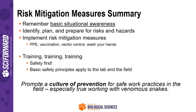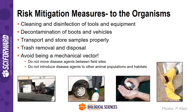The basic thing is situational awareness. We need to plan, prepare for risks and hazards, implement risk mitigation measures, make sure we have correct PPE, vaccination, and vector control. It's all about training and communication. We need to promote a culture of prevention for dealing with field work safety — especially true when working with venomous snakes in the field. Field researchers don't want to be the vector. IACUCs need to ask field researchers how they're going to clean and disinfect their tools moving from place to place. We don't want to carry vectors between field sites.